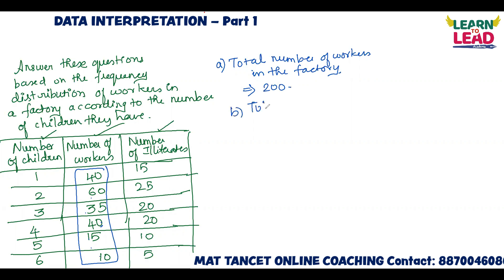The next question: total number of children of all the workers. Read the question carefully — total number of children of all the workers. For 40 workers, they have 1 child each. 60 workers have 2 children each. 35 workers have 3 children each. 40 workers have 4 children each. 15 workers have 5 children each. And 10 workers have 6 children each.